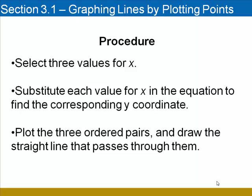Here's the procedure we're going to follow. We'll select three different values for x. We'll substitute each of those values for x in the equation to find the corresponding y-coordinate. Then we'll finish by plotting the three ordered pairs and drawing the straight line that passes through them.